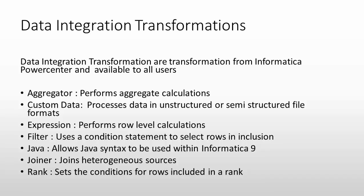Expression transformation is used to perform row-level calculations. Filter transformation is used to apply filter conditions — for example, if you want to perform operations only on a specific type of data, such as person type and not organization, you can use the filter transformation to apply the filtering logic.